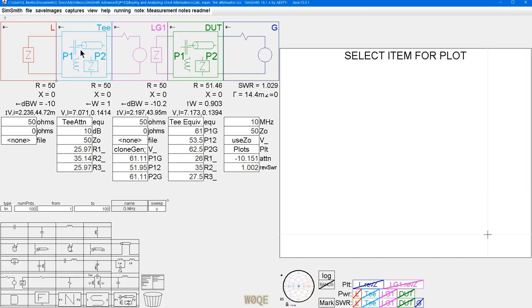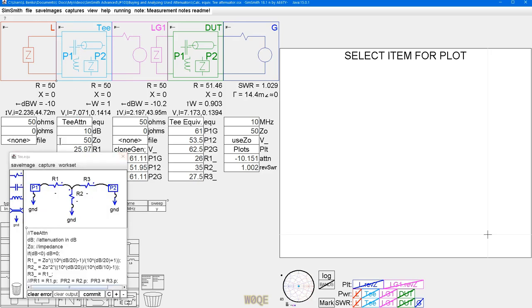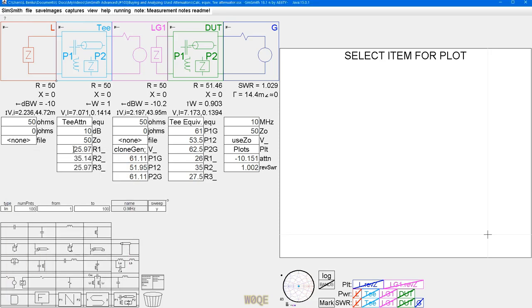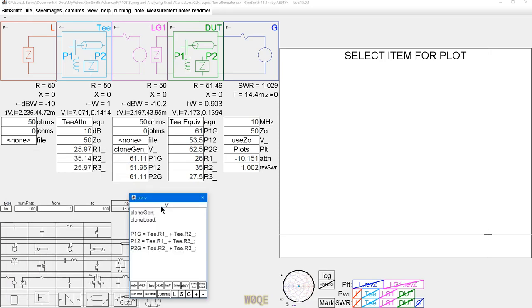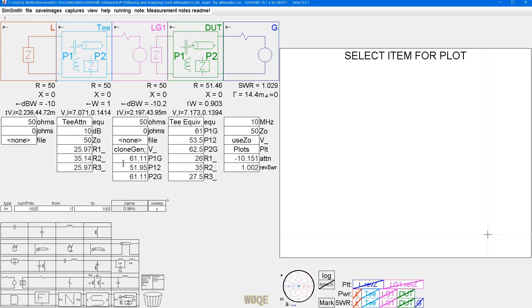In this case, we have two things to do. The first thing we're going to do is take an ideal attenuator per your specifications, 10 dB and 50 ohms in this case, build an ideal T network out of it. From those values we have for the ideal T network, we're going to then convert those into the measured values, P1G, P2G, and P12.